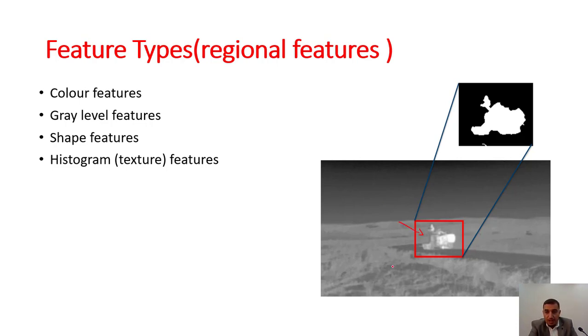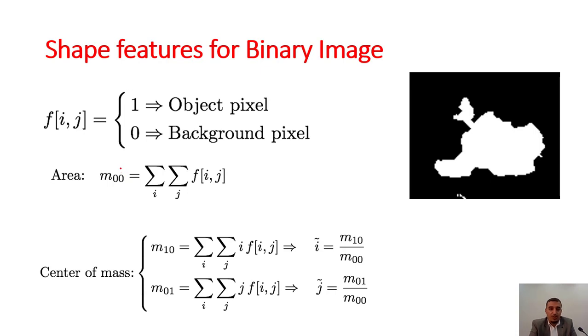For example, if we have this moon rover moving on the moon and we want to extract its features, different types of features exist: color features, grayscale features, shape features, and histogram features. The shape features are quite the easiest one where we take the moon rover and generate a binary image where one is an object pixel, zero is a background. We can calculate the area by summing all the ones.